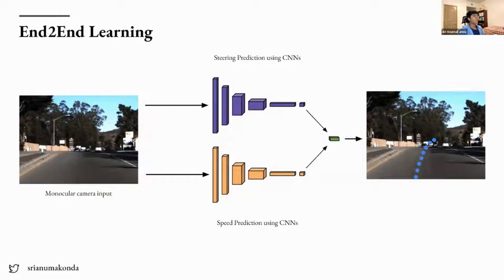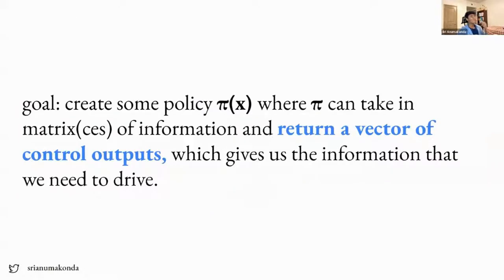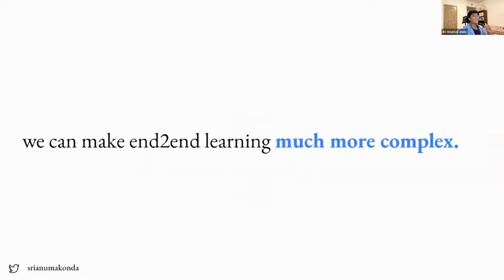The main idea behind end-to-end learning is that given a camera input, we can use CNNs and deep convolutional networks to extract information about lane lines, cars, objects, and pedestrians in our scene. In formal terms, the goal is to create a policy π(x) where π takes in matrices of information — our camera image — and returns a vector of control outputs: steering, brake, throttle, and so on, which gives us the information needed to drive.